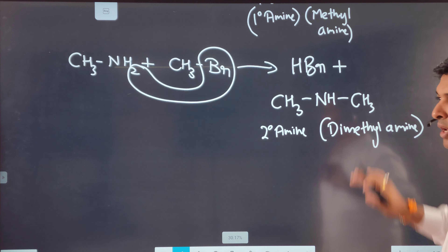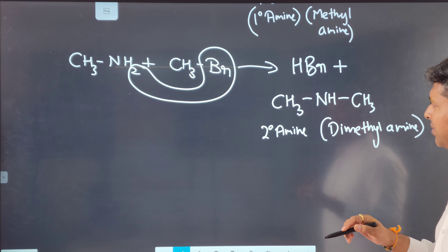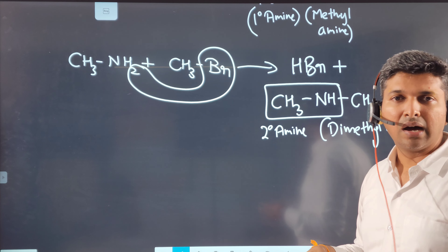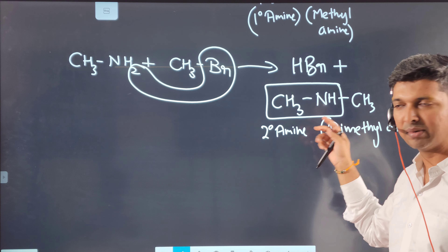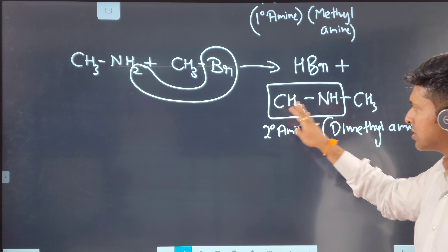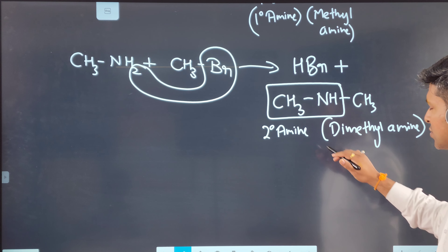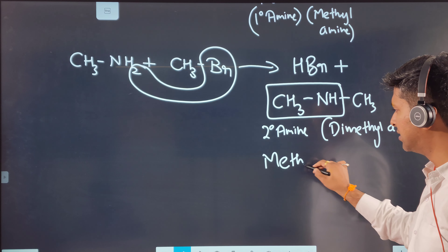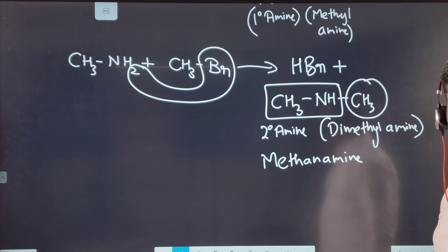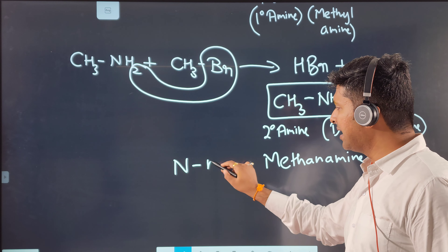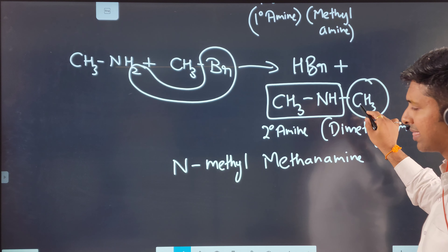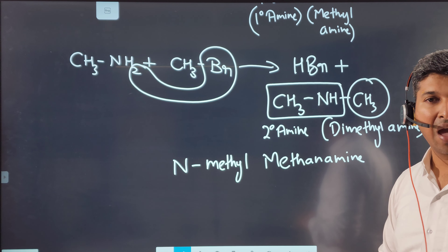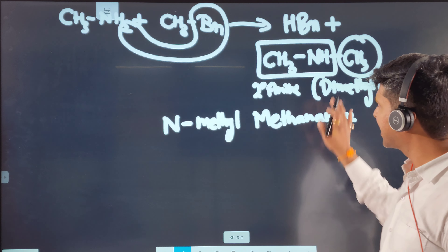The IUPAC name has a twist. You select the parent chain — here both chains have one carbon each, so either can be chosen. The parent chain is methanamine, and the substituent on nitrogen is methyl, so it is written as N-methyl-methanamine. This is a secondary amine.